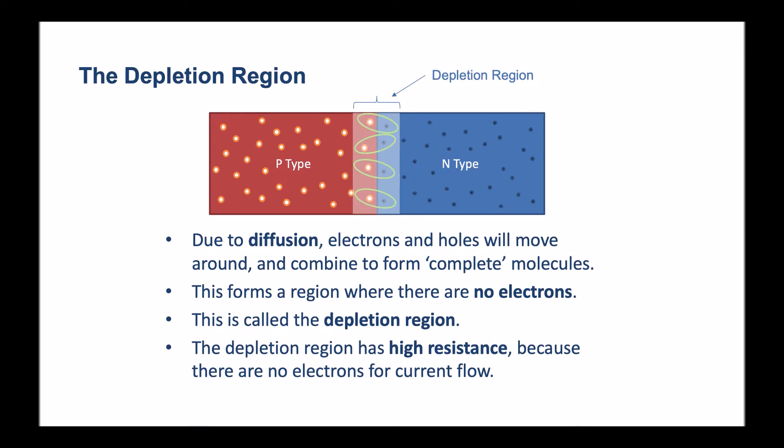The depletion region has high resistance because there are no electrons available for current flow.